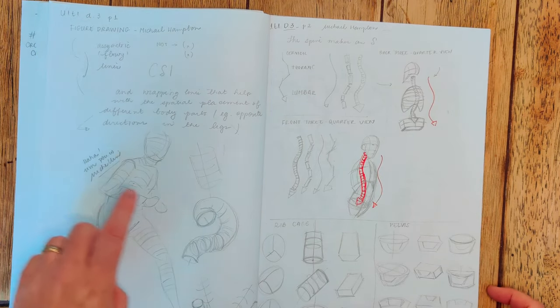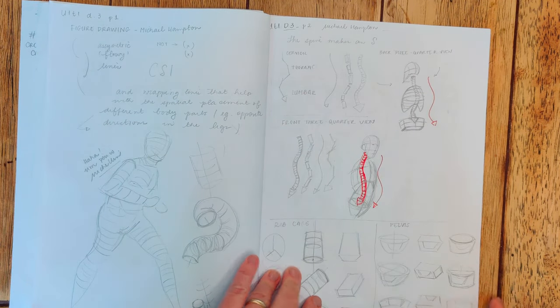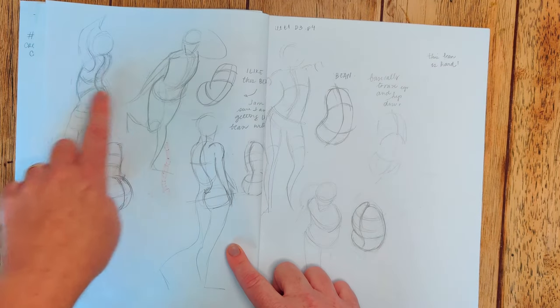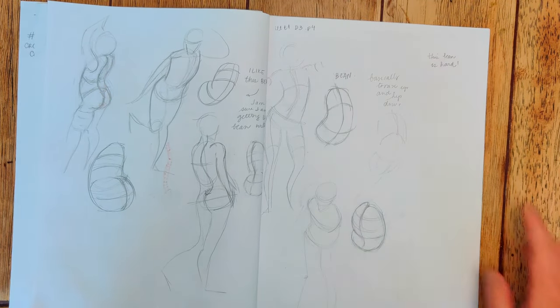So I took note of the structure, the spine, the hip cage, and went on to draw the poses and isolate the beans. I think it was useful.